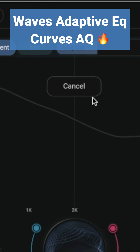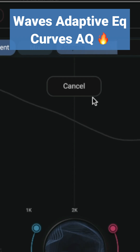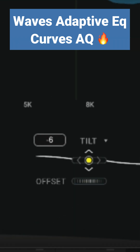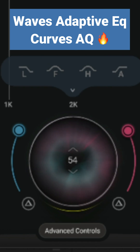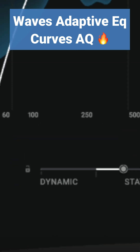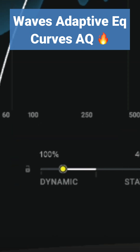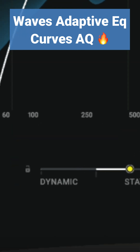It may suggest an EQ curve after learning the audio, but you can use features like tilt, processing amount, blending a mix of static EQ and dynamic EQ to mold the EQ for your mix, and many other ways.